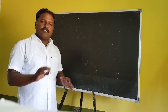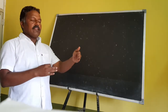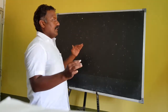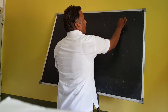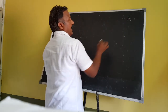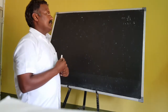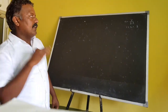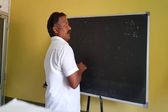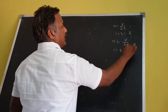Good morning students. Yesterday I discussed about stationary waves formed in open tubes and closed tubes. For an open tube, the fundamental frequency n is equal to V by 2L, and the frequency ratio is 1:2:3. For a closed tube, the fundamental frequency n is equal to V by 4L, and the frequency ratio is 1:3:5.